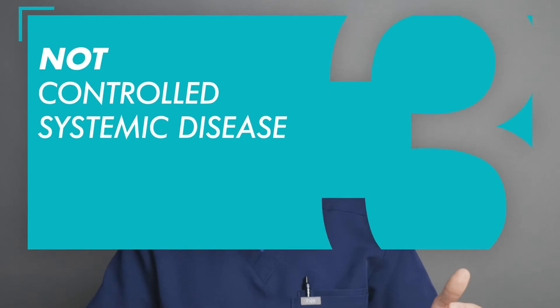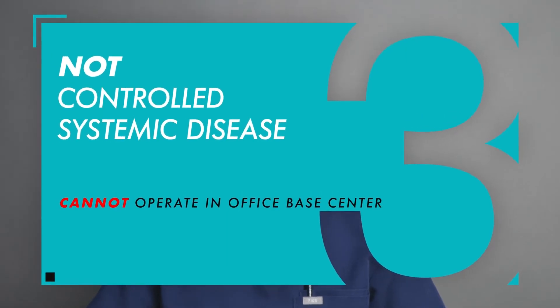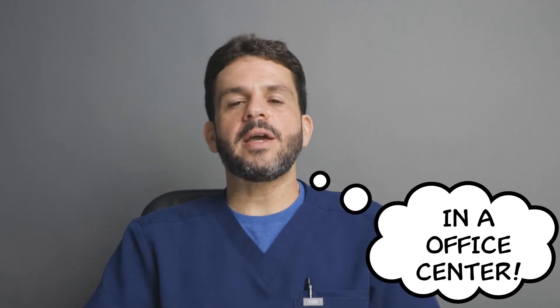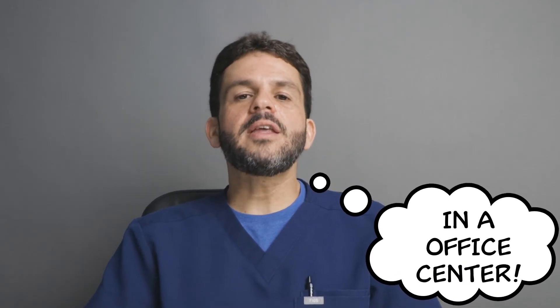An ASA 3 patient has an uncontrolled systemic disease — for example, someone that has heart disease, hypertension that is not well controlled, or diabetes that is not well controlled. We are not allowed to perform procedures in office settings on patients that are ASA 3.